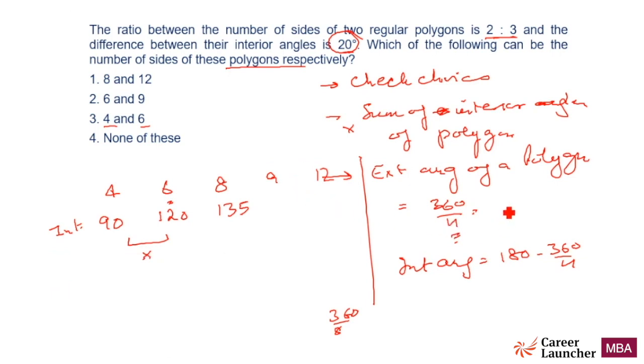What about 9? Let me write down the exterior angle also here so that students are not confused. 60, sum of exterior plus interior angle will be 180, this is 45.